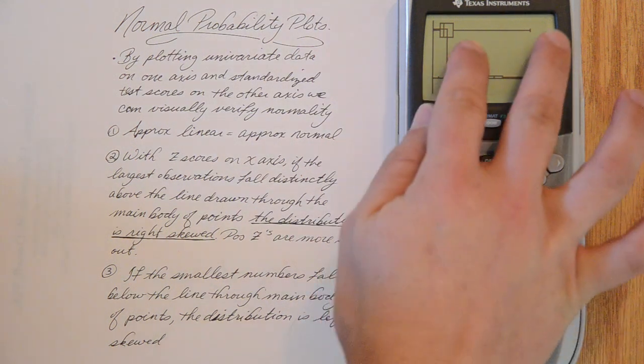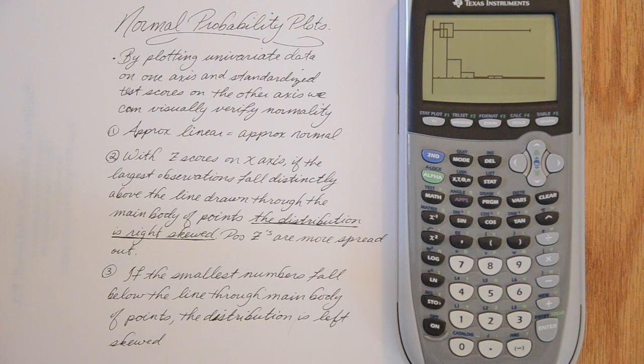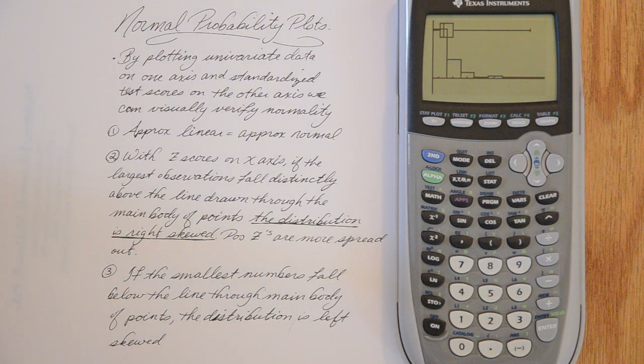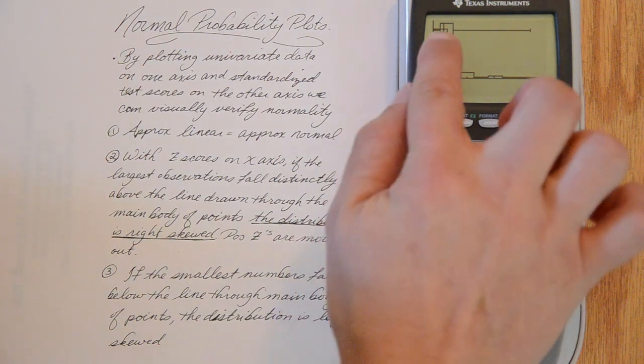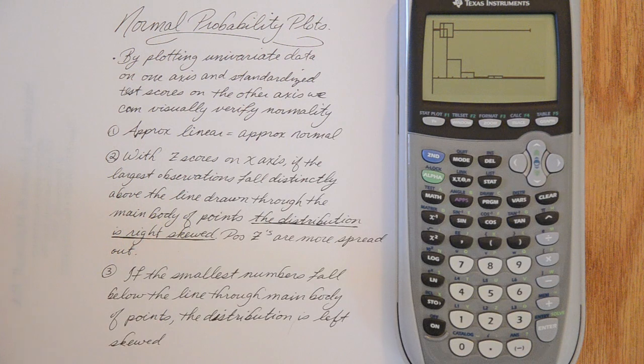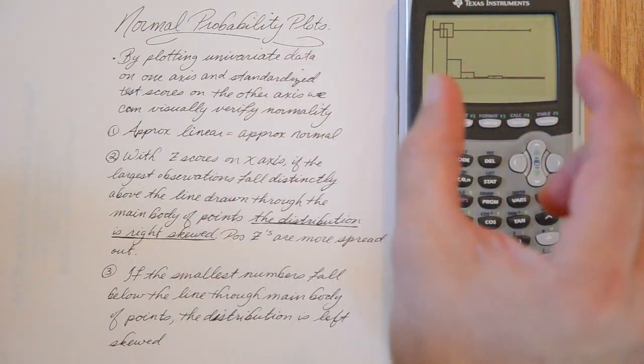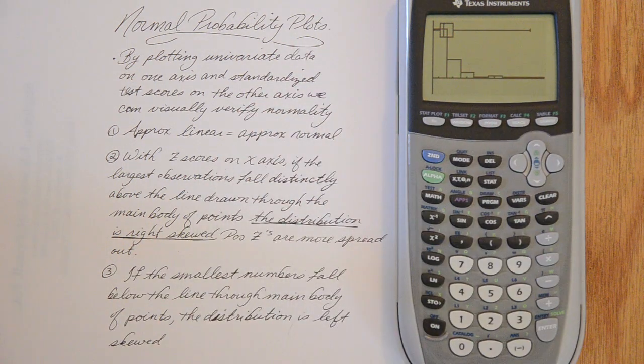Now, every time that we have one really long whisker in one direction, that does not automatically mean skewness. It could also mean an outlier. So why does this box plot show that it is skewed to the right? Well, you can't see it in this picture very well. But if your intervals increase as you go to the right, then it is right skewed.